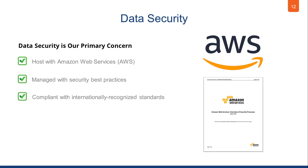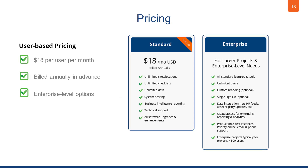At Certainty, data security is a primary concern, which is why we work with Amazon Web Services, AWS, a global leader in data security. Certainty is based on a user pricing model at $18 USD per user per month, billed annually in advance, and we offer enterprise-level pricing options for projects with larger numbers of users.